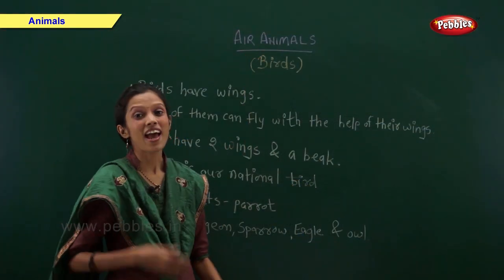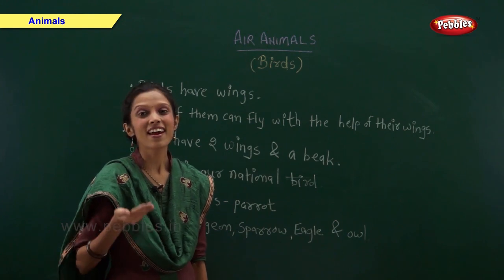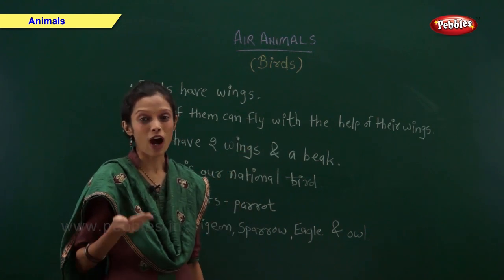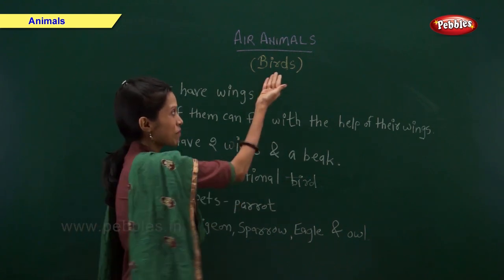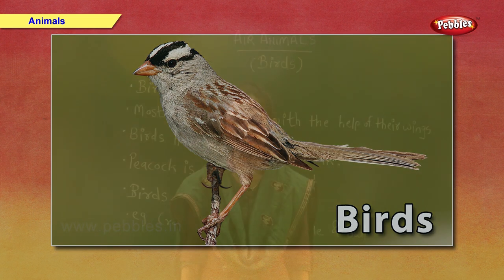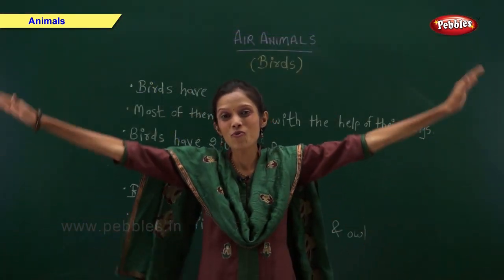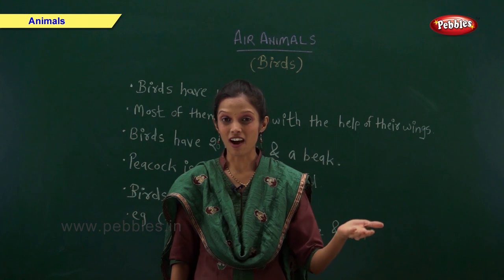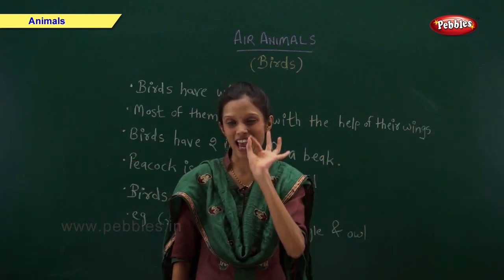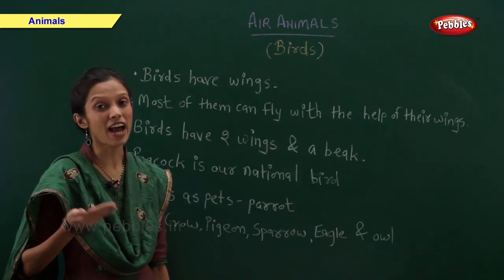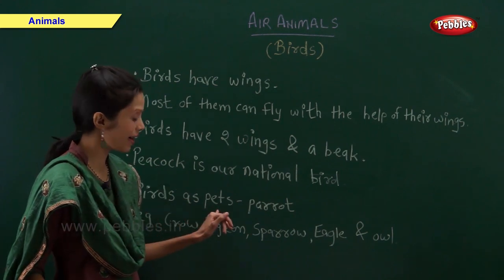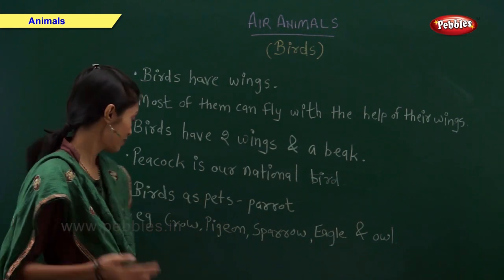Air animals are divided into two groups: birds and insects. Now let us have a look at birds. Birds have wings. Most of them can fly with the help of their wings. Birds have two wings and a beak. Peacock is our national bird. Some people also keep birds as pets — parrot is an example.